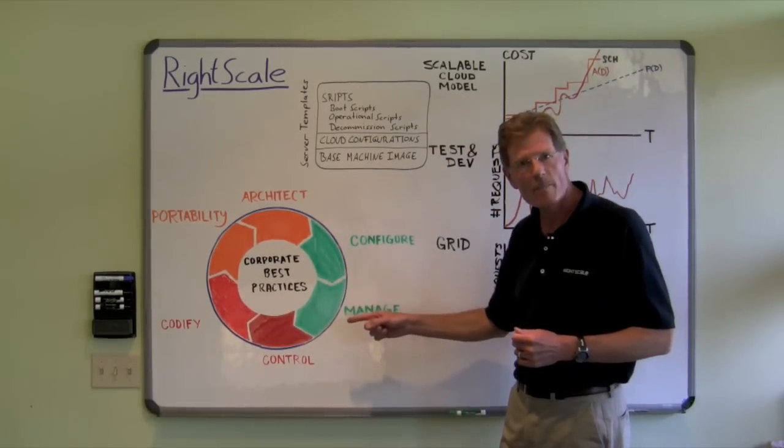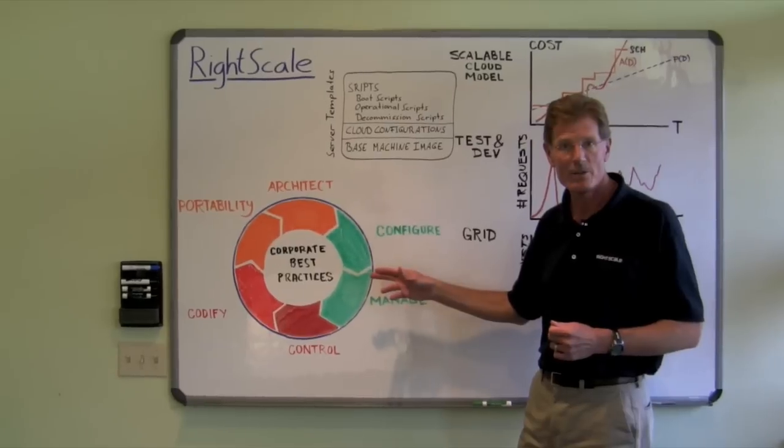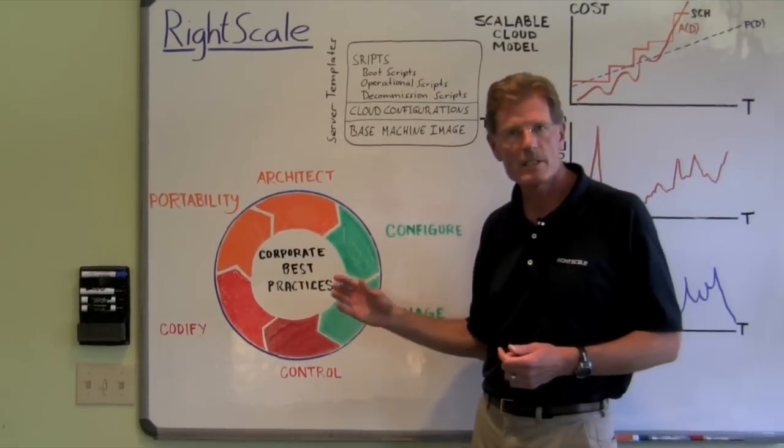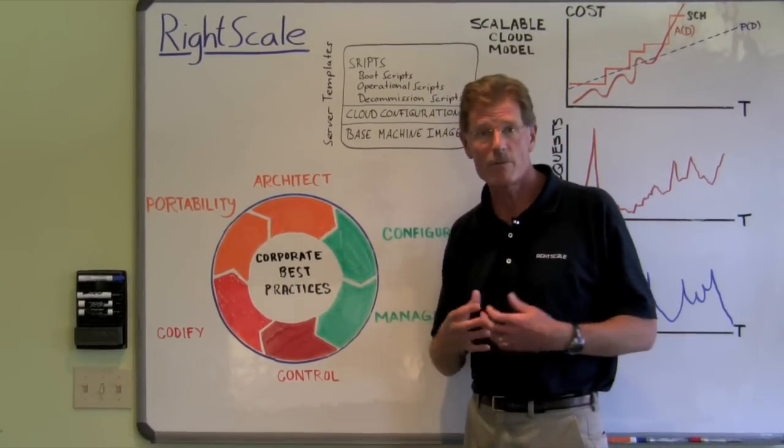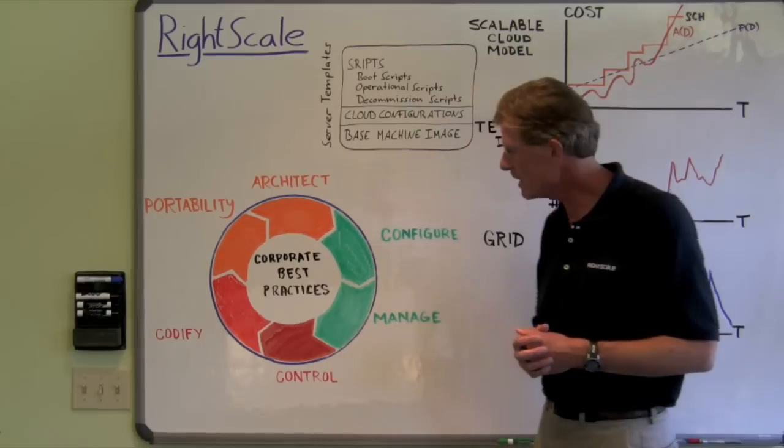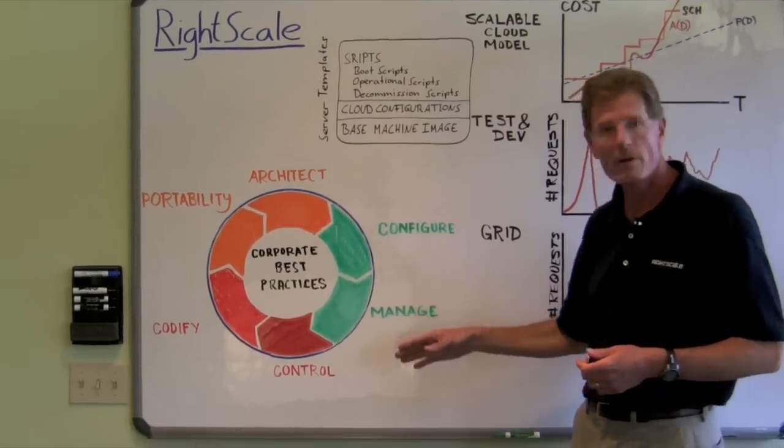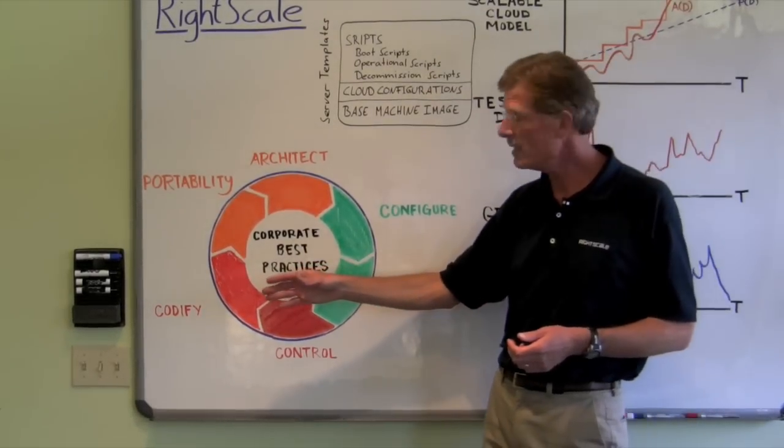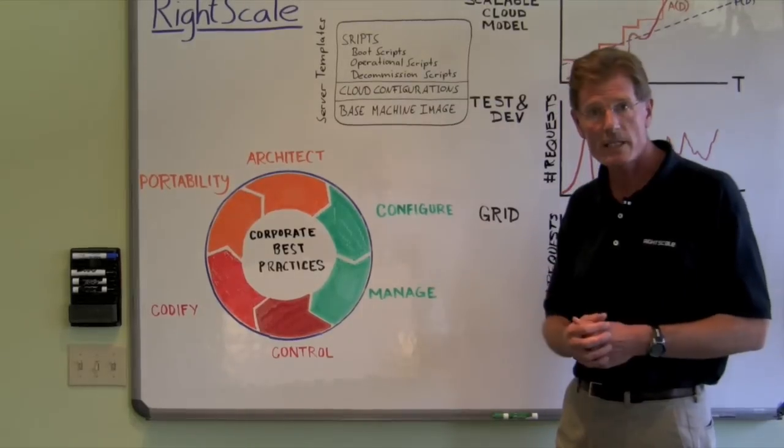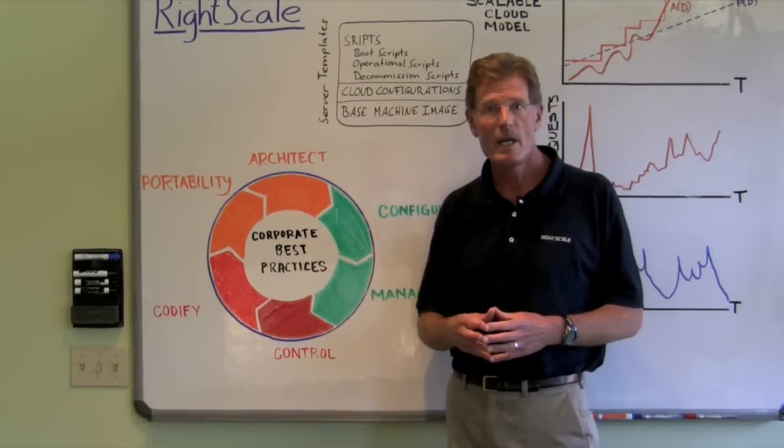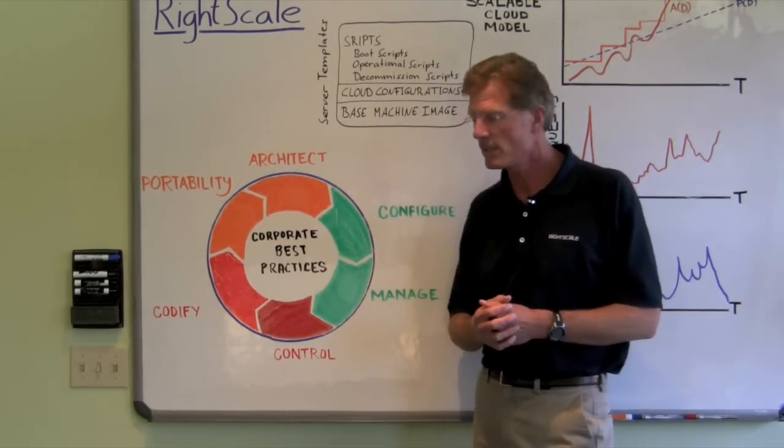To speak for a moment about what we call the wheel of value at RightScale, we can see that there are really a number of points that a cloud management platform provides. They range all the way from configuration and management through to control, visibility, codification of best practices for corporate governance, as well as portability and choice in architecting solutions.